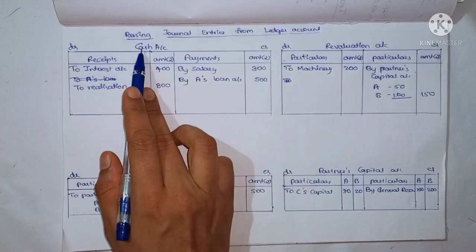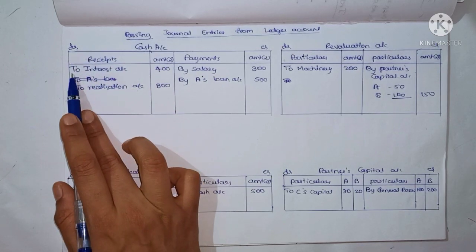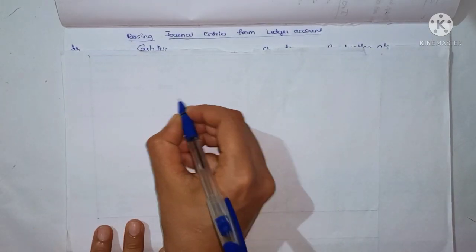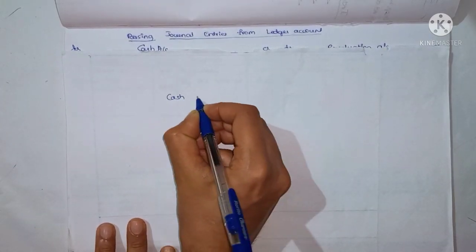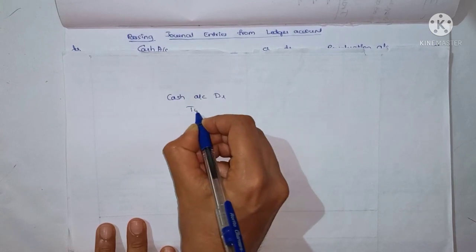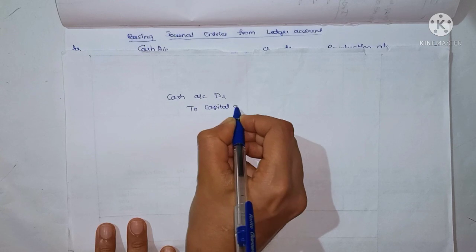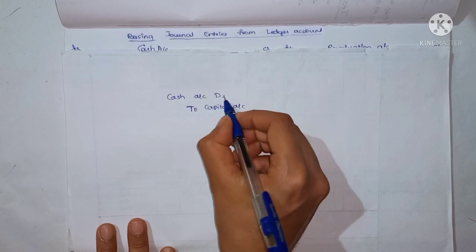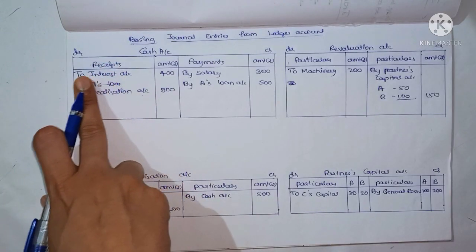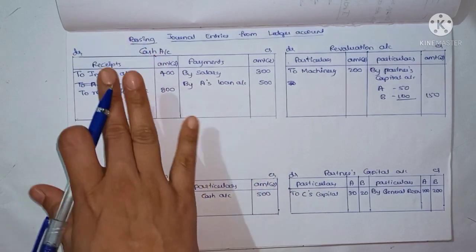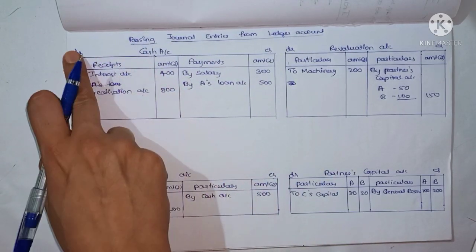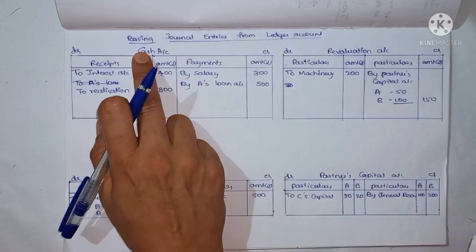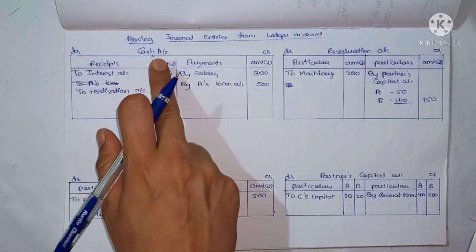We have entries on the debit side, so we have 2 items. We will transfer them to journal entries. For example, Cash Account debit to Capital Account. You add the credit entry and the debit entry accordingly. This is easy to convert to the journal entry.